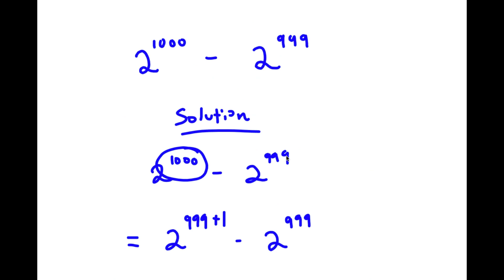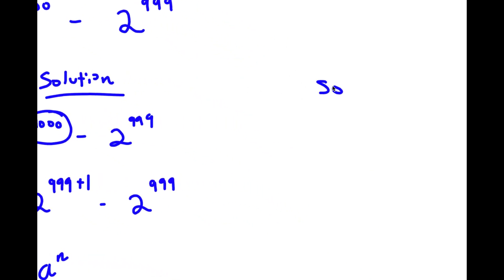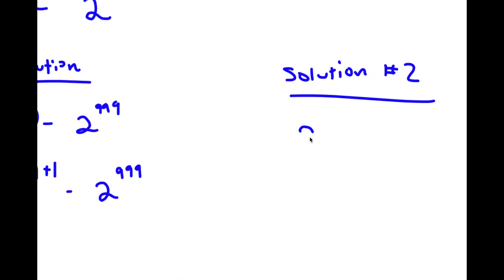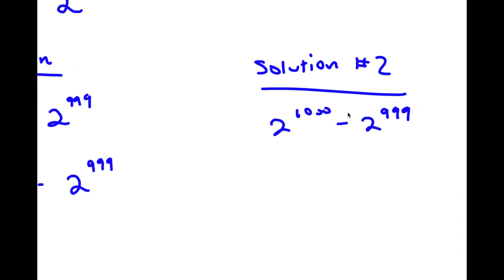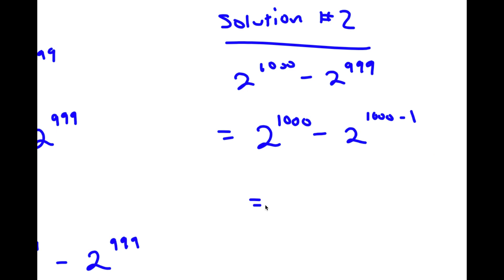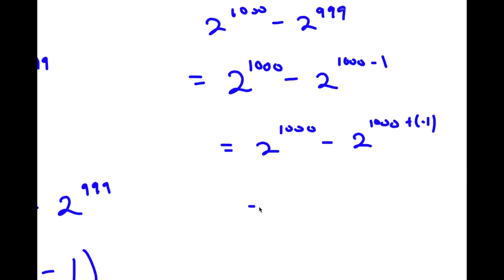Now another way of doing this. I first start with 2 to the power of 1000 minus 2 to the power of 999. This time I'm going to rewrite 999 as 1000 minus 1. So now I have 2 to the power of 1000 minus 2 to the power of 1000 minus 1. That's the same thing as 2 to the power of 1000 minus 2 to the power of 1000 plus negative 1, which equals 2 to the power of 1000 minus 2 to the power of 1000 times 2 to the power of negative 1.